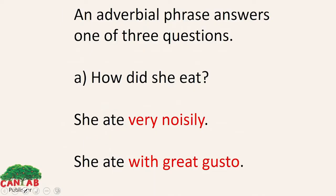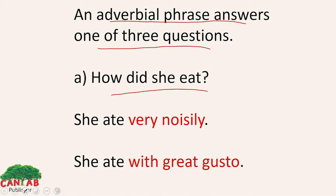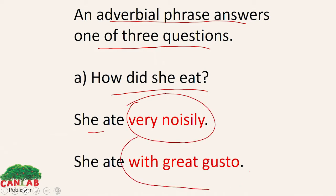Let's move forward. Here are some examples. An adverbial phrase answers one of three questions. How did she eat? She ate very noisily — she ate with great gusto. Those are adverbial phrases of manner, telling you how the action was done.